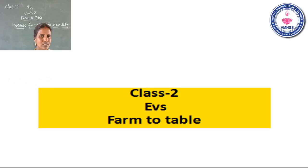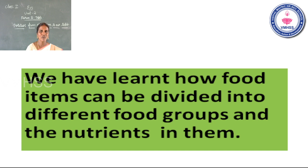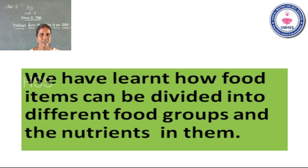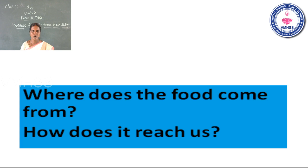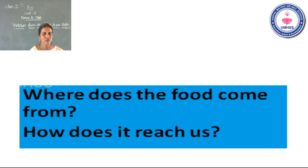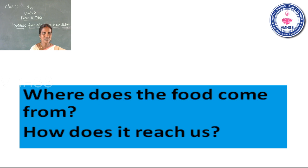Students, now look at the slide. We have learnt how food items can be divided into different food groups and the nutrients in them. Today's session we are going to learn about where does the food come from, how does it reach us, and what are the processes going on? Think and see the answer: where does the food come from? Where does the potato come from? How does it reach us?